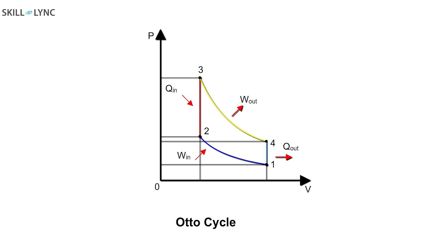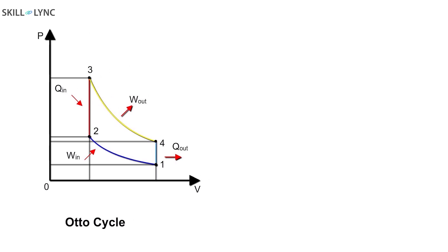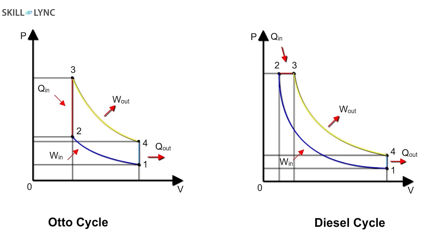All SI engines employ the Otto cycle for operation. On the other hand, CI engines employ the diesel cycle for slow speed engines and dual cycle for high speed engines.